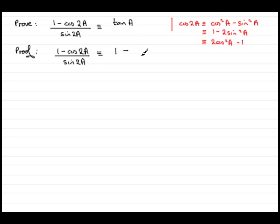So I kind of want sines in the top here. So I'm going to go for this particular identity here: 1 minus 2 sine squared a. But I've got to remember because of this minus, I need to put a bracket up here. So we've got 1 minus 2 sine squared a.